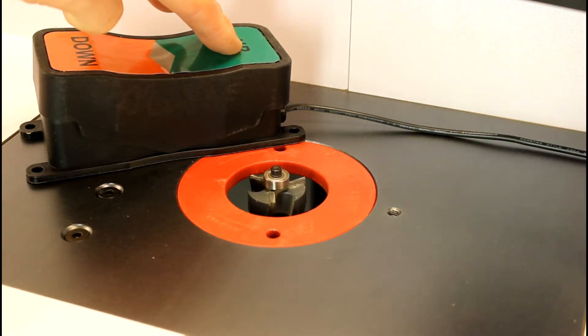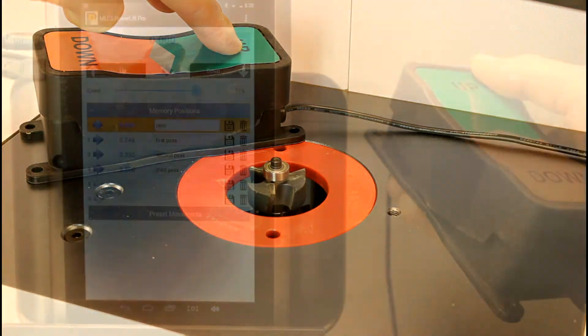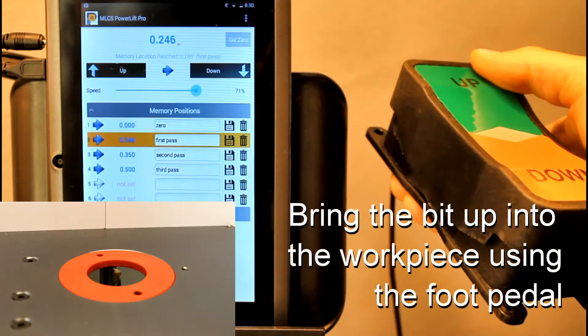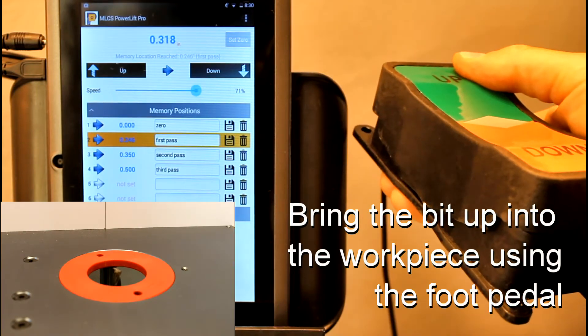Cutting a circle should be done in a few passes, raising the bit between each pass. The PowerLift Pro Android app allows you to store up to six bit positions. Using the foot pedal, you can move between those stored positions.